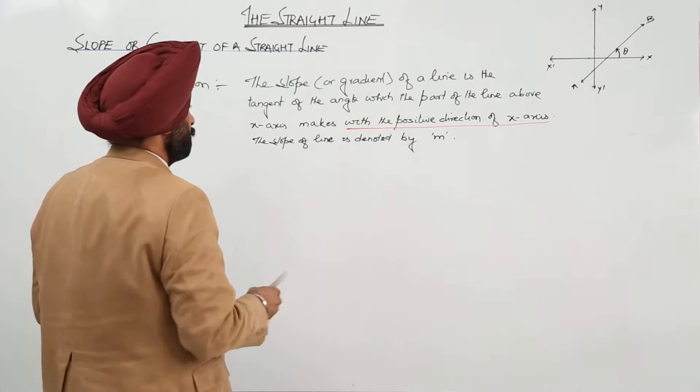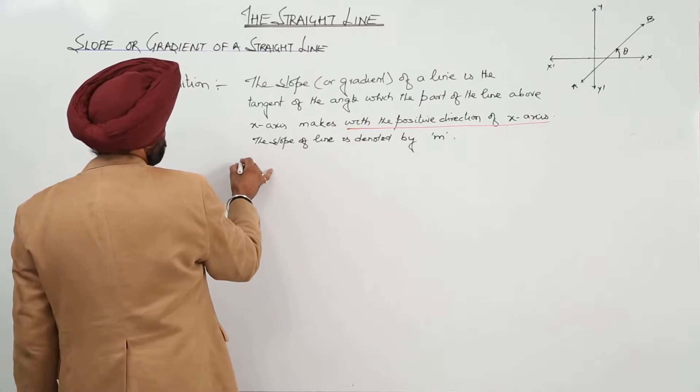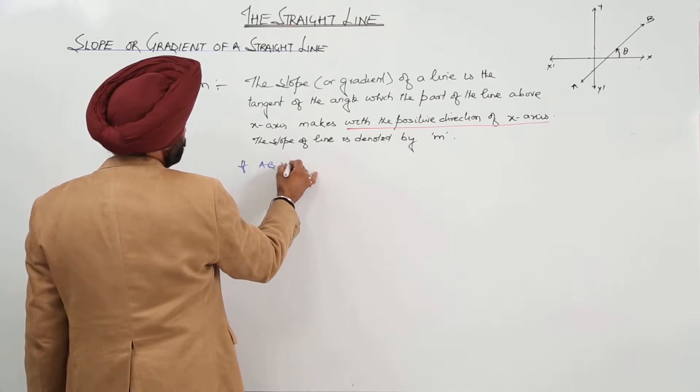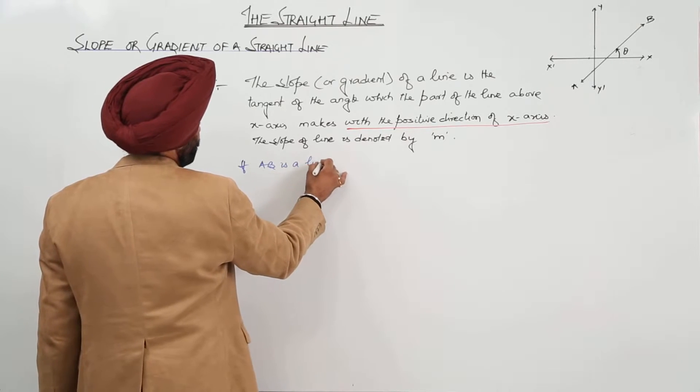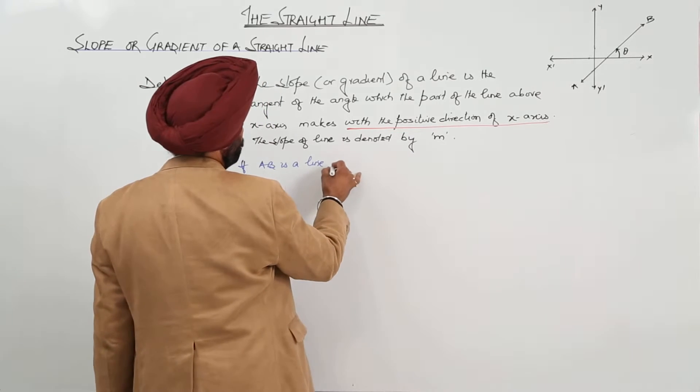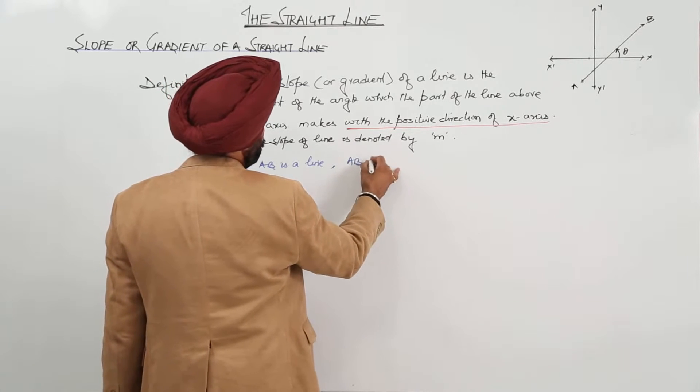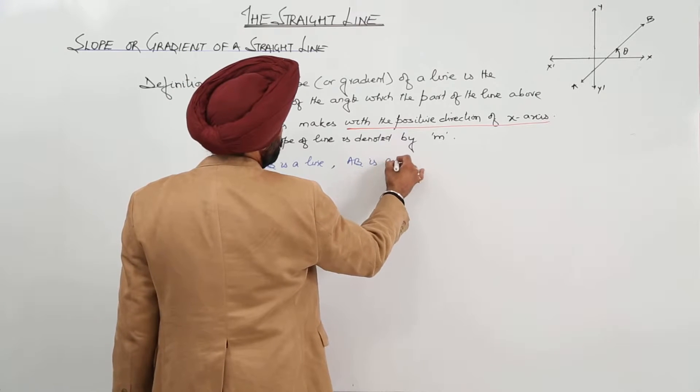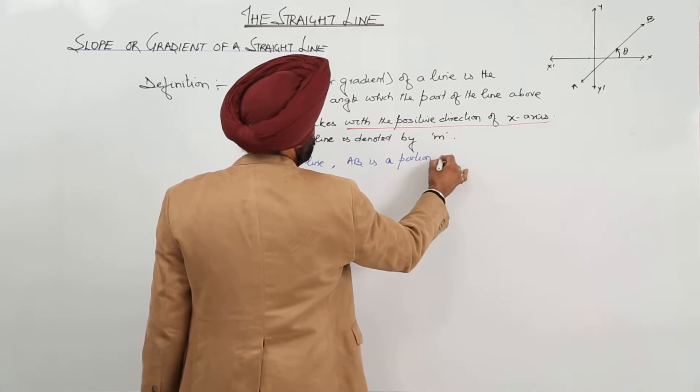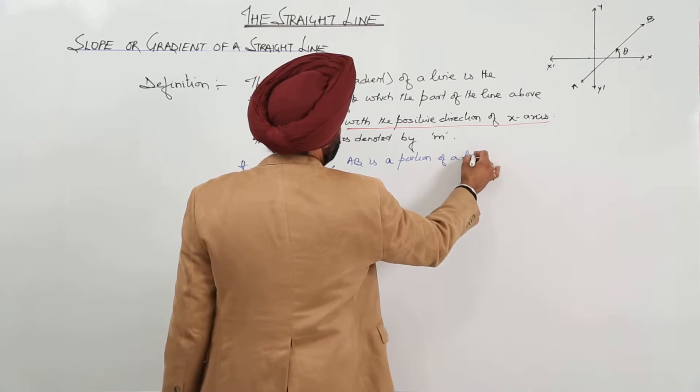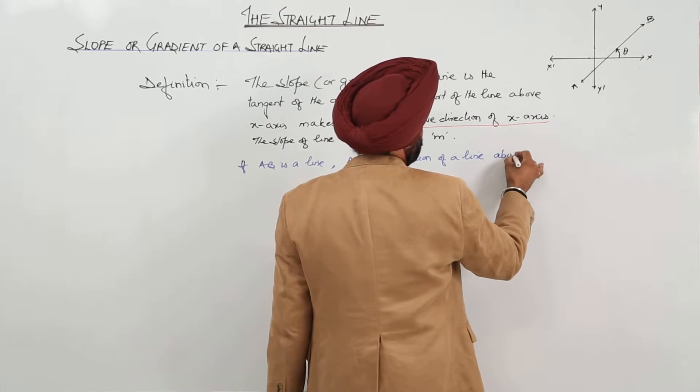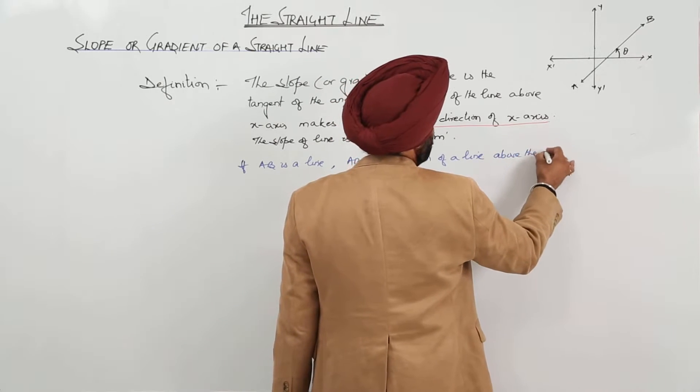Now, for the figure, if AB is a line, that is in the given figure, if AB is a portion of a line above the x-axis, portion of a line above the x-axis.